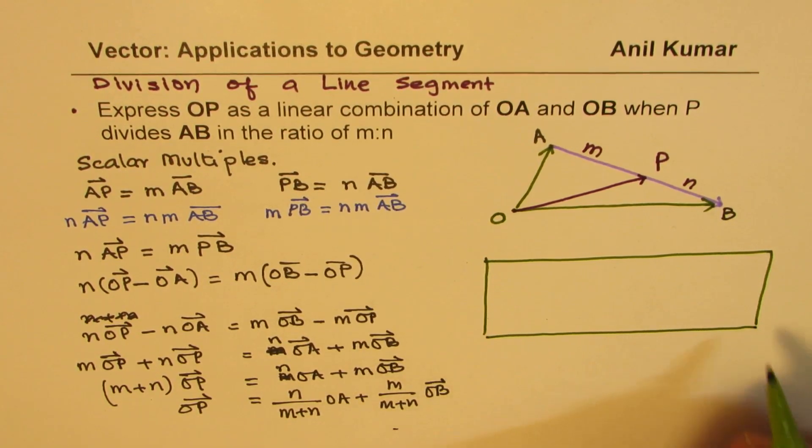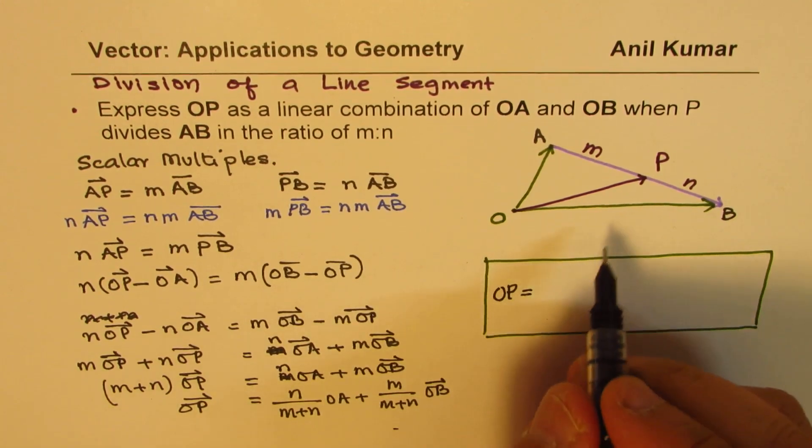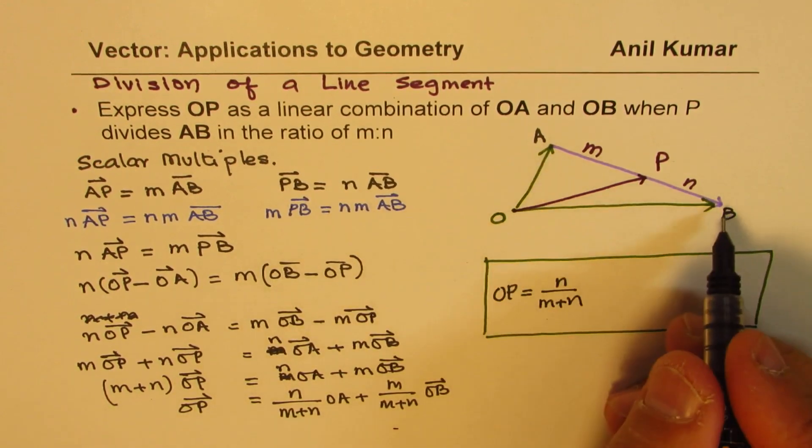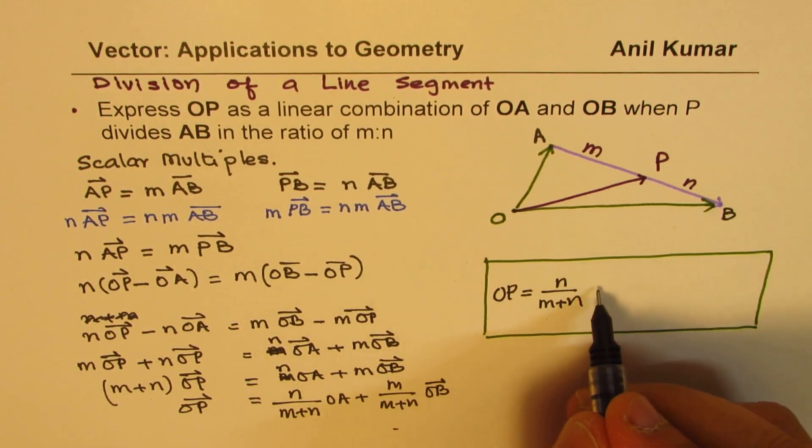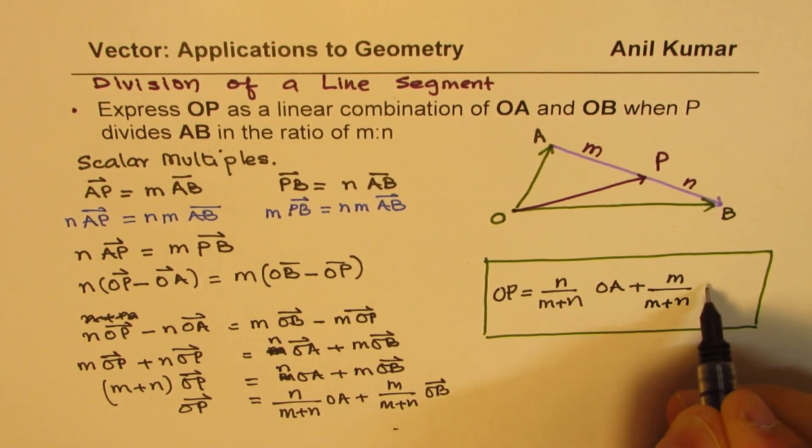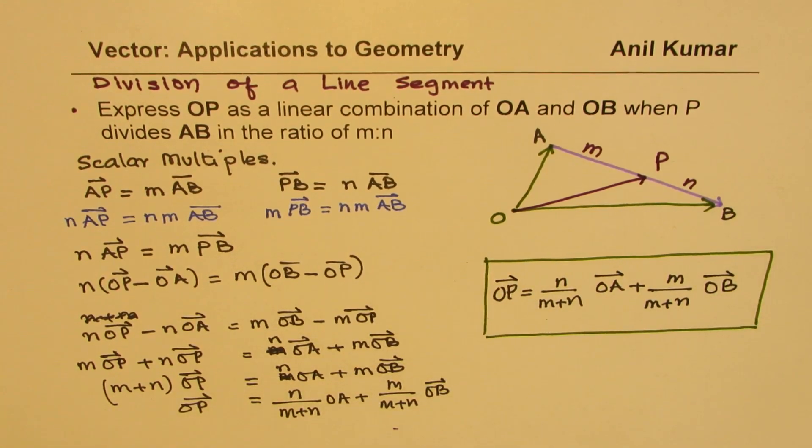Let me rewrite this formula here. It is also called section formula. OP is equal to N over M plus N times OA plus M over M plus N times OB. This is the formula which will be utilized many times when we are talking about geometrical applications.